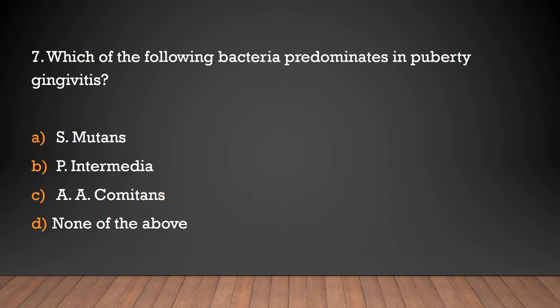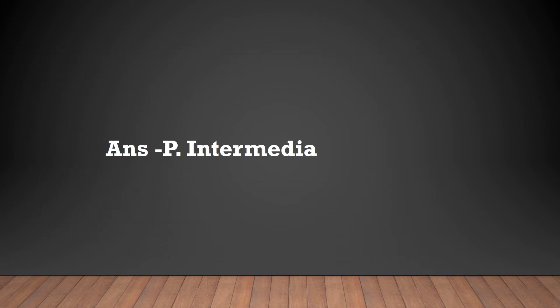Which of the following bacteria predominates in puberty gingivitis? S. mutans, P. intermedia, A. actinomycetemcomitans, or none of the above? Answer: P. intermedia — Prevotella intermedia predominates in puberty gingivitis.